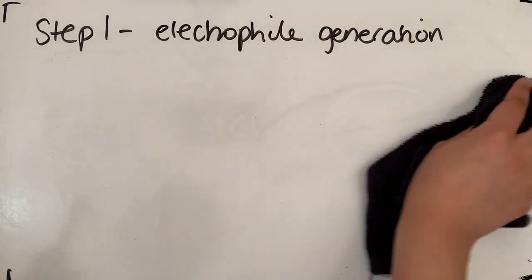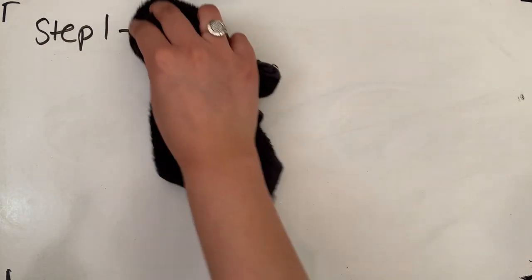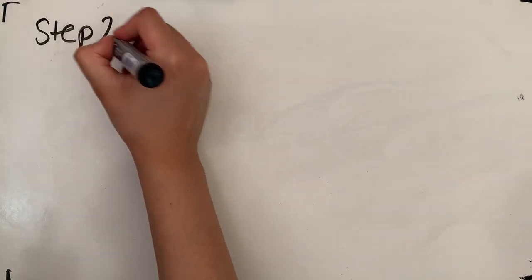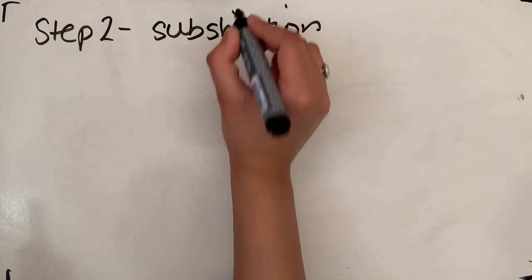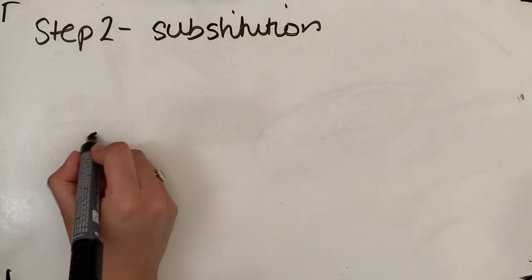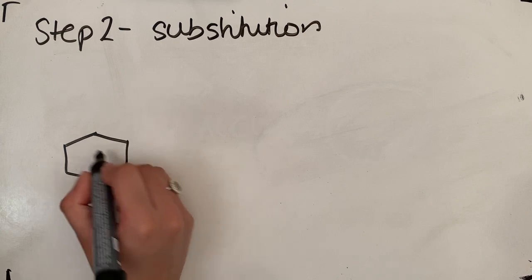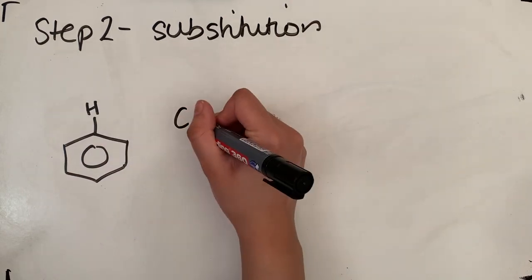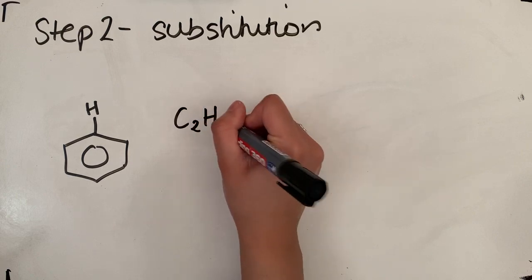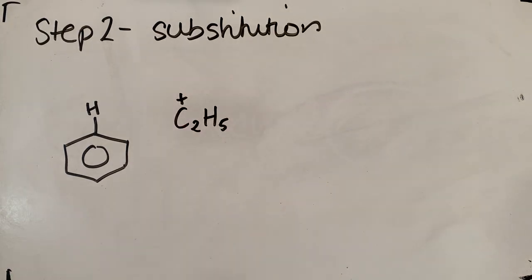So step two is always our substitution where we use our curly arrows to show what is happening. So step two is substitution. Our benzene ring, I'll draw that top hydrogen in and we have our electrophile here. Curly arrows always starting from our delocalized ring going to our electrophile.